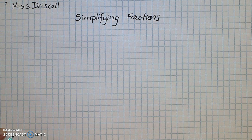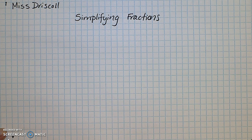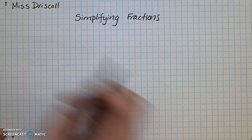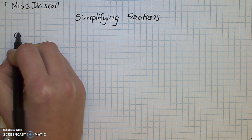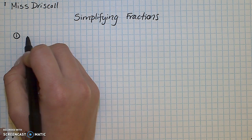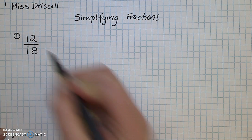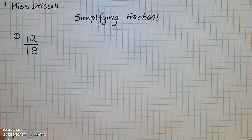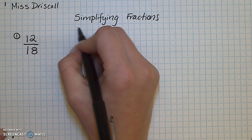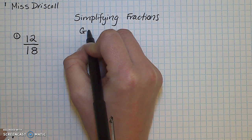When simplifying fractions, you want to make sure you find the greatest common factor between the numerator and denominator. The first step in finding the simplest form is to find the GCF, or the greatest common factor.